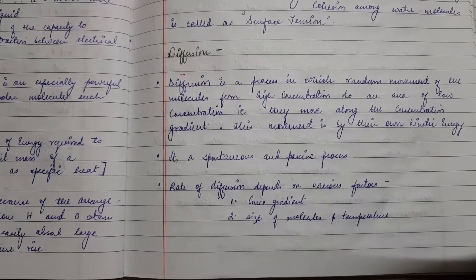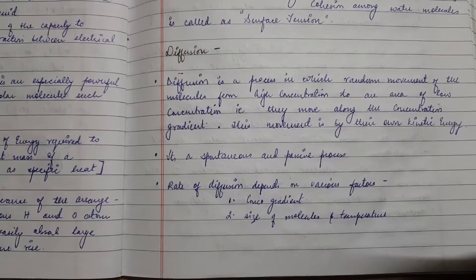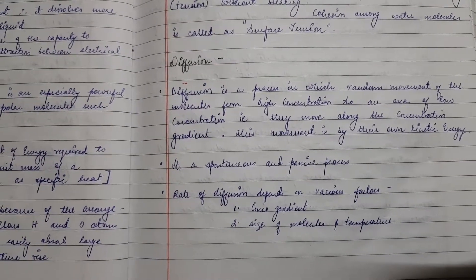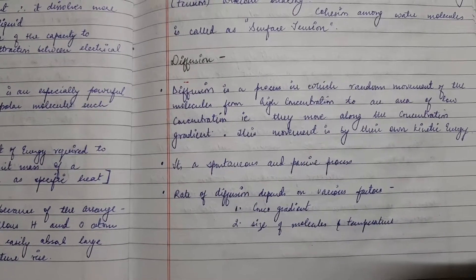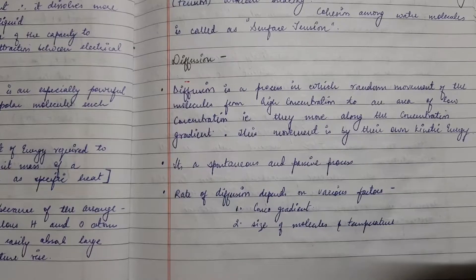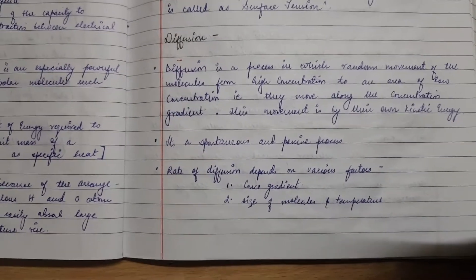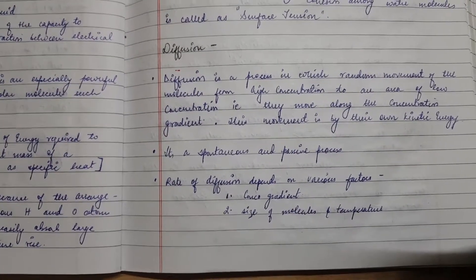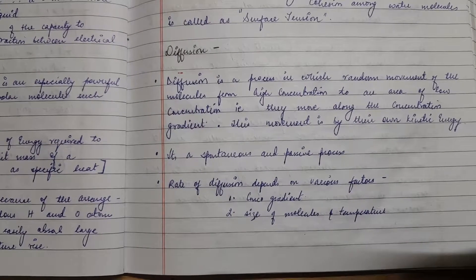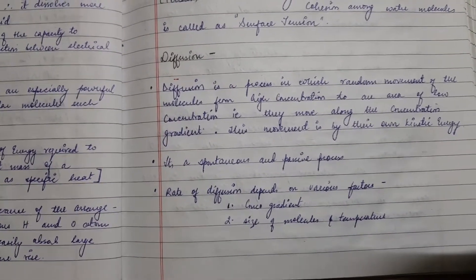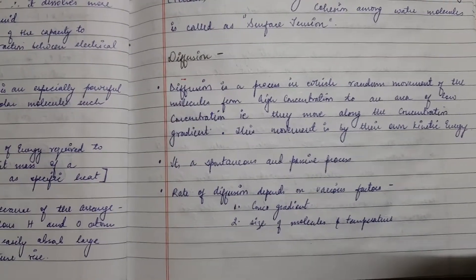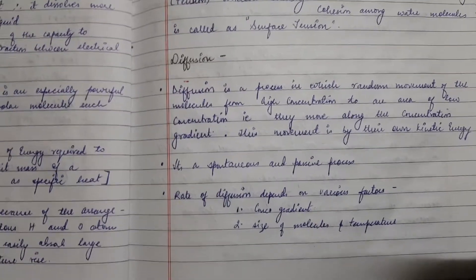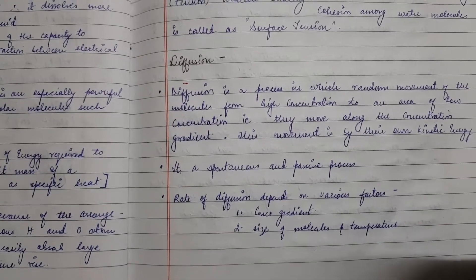Movement can be along the concentration gradient — from high to low concentration — or against the concentration gradient, meaning from low to high concentration. Diffusion along the concentration gradient is a spontaneous and passive process driven by the molecules' own kinetic energy. The rate of diffusion depends on two factors: the size of the molecules and the temperature, as well as the concentration gradient.